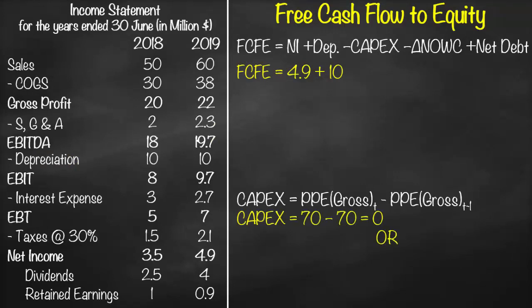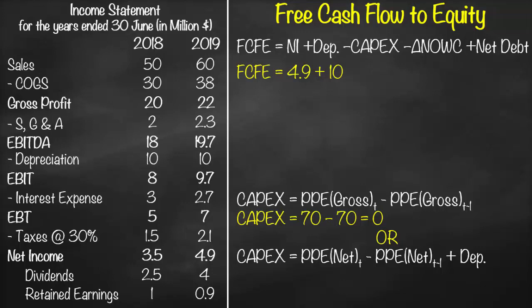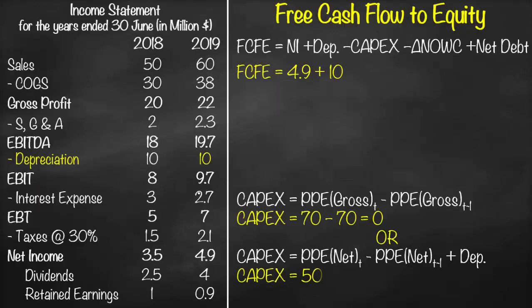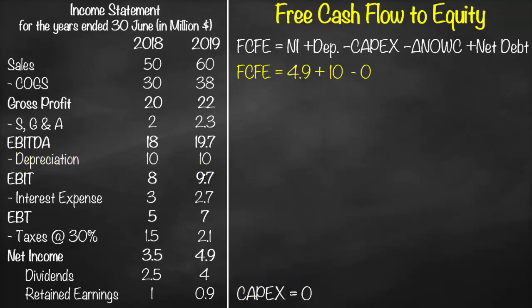Alternatively, we calculate CapEx using net PP&E: net PP&E at time t minus net PP&E at the previous year, plus annual depreciation from the income statement. From the balance sheet, net PP&E in 2019 is 50, minus net PP&E in 2018 of 60, plus depreciation of 10 from the income statement. This gives exactly the same value: zero. So in our formula we subtract zero.